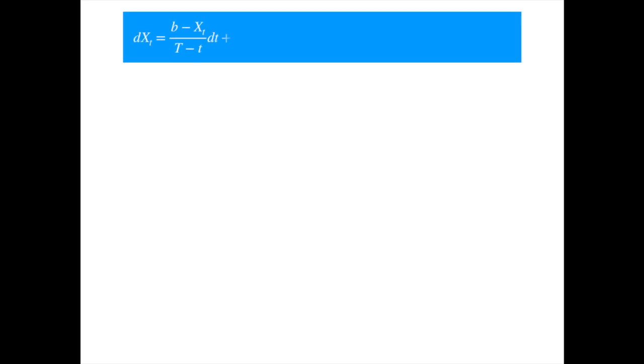Let's start with the Brownian bridge general SDE. The start and end values of the process are assumed to be known, and we represent them by A and B. It looks very similar to the Ornstein-Uhlenbeck process. You can see that the drift again forces X in the direction of B, the end point.